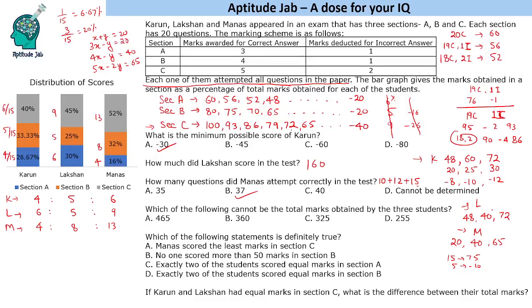For the question about which total cannot be achieved: Lakshan's total is 160 and Manas's total is 125, giving a combined 285. For Karun's three possible sets, the totals are 180, 75, and minus 30. Adding to 285: possible totals are 465, 360, and 255. So 325 is not a possible total for the three students.